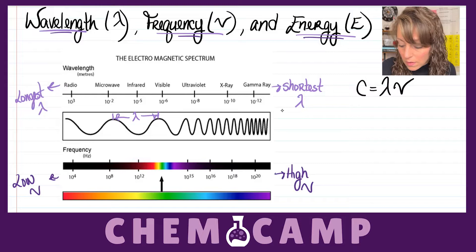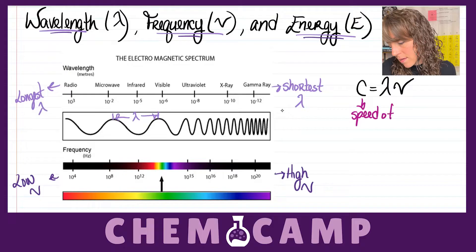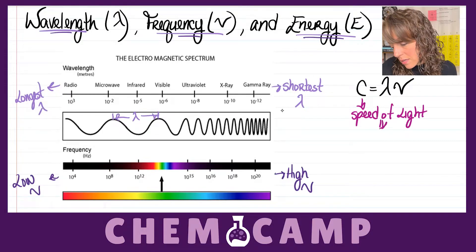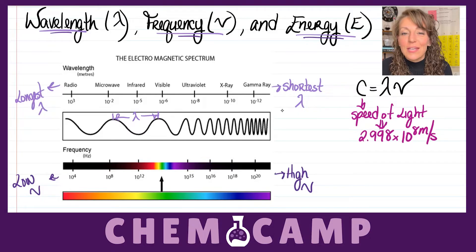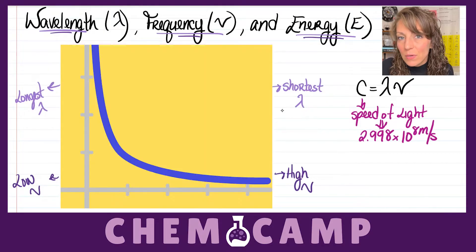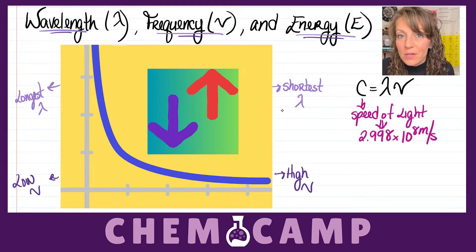Now if you recall, your speed of light is a constant which equals 2.998 times 10 to the eighth meters per second. This equation helps represent the fact that your wavelength and frequency are inversely proportional, because as one goes up, the other goes down.